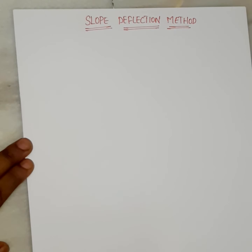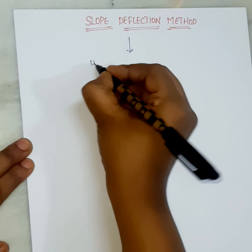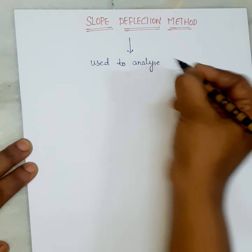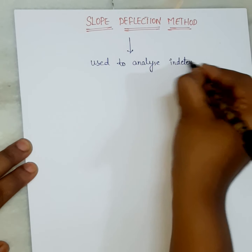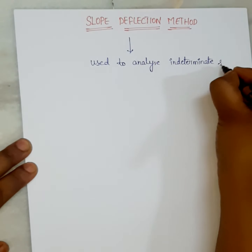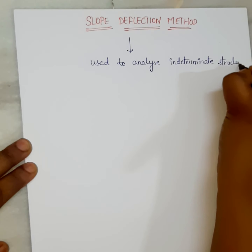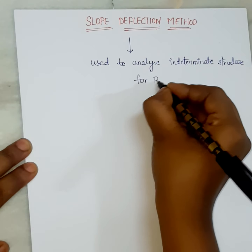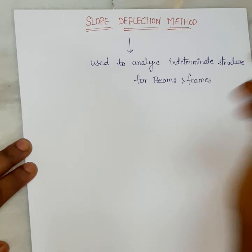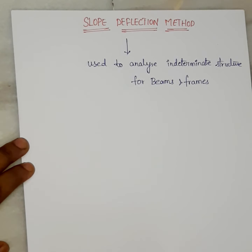Hi everyone, welcome back to my channel. In today's video I want to discuss about the slope deflection method. Generally, this method is used to analyze indeterminate type of structures — for beams and frames.